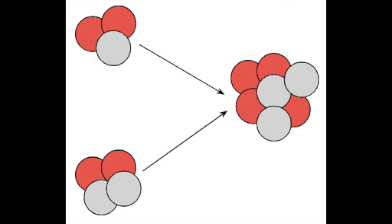The sun does this constantly by fusing hydrogen nuclei into helium, in a process that releases immense amounts of energy and heat.